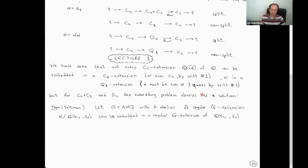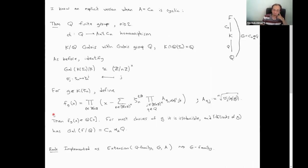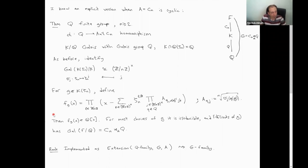I don't know a very explicit version of this theorem unfortunately — that would be quite helpful, and I put it as a research problem. But I do know an explicit version when the abelian group A by which you extend is cyclic. Let me give it to you, because it's very similar to the theorem we had last time about how to construct cyclic groups in the first place.